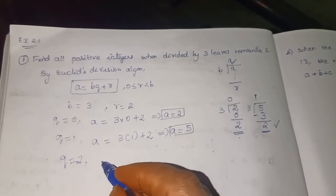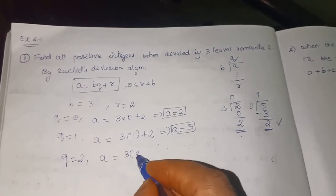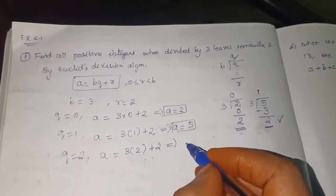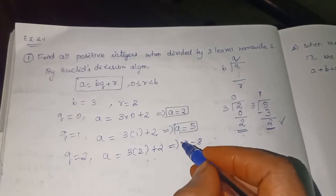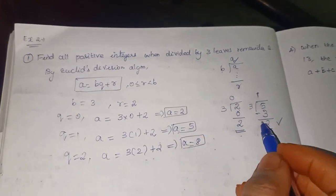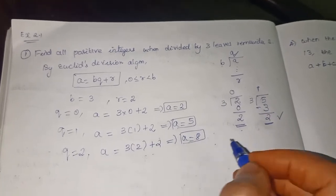Next, start applying Q is equal to 2. So A is equal to 3 into 2 plus 2. So A is equal to 8. When you divide 8 by 3 you will get same remainder. 3, 2 is 6. So 2 will be the remainder.